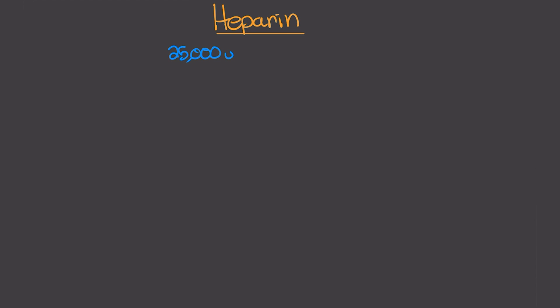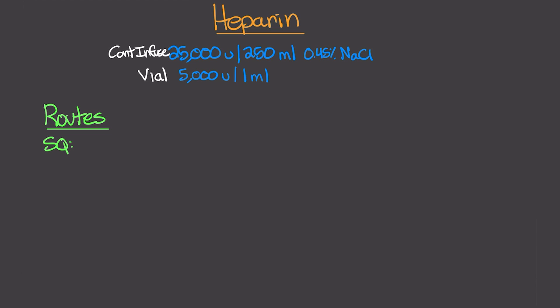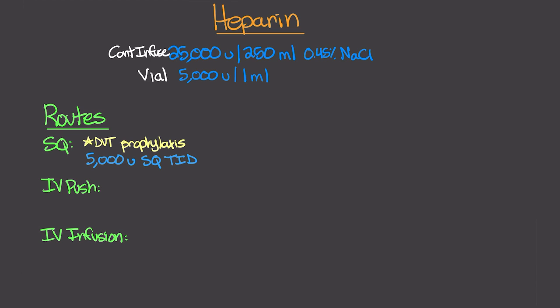Heparin is typically found in a concentration of 25,000 units in 250 mL for continuous infusion, and in 5,000 unit concentrations for IV push doses. It can be given subcutaneously, IV push, or as a continuous infusion. Subcutaneous administration is typically used for DVT prophylaxis at 5,000 units SubQ three times daily. IV infusion is the most common route in the ICU, ranging from 12 to 18 units per kilogram per hour. A loading bolus of 60 to 80 units per kilogram may be given depending on the indication and hospital protocol.